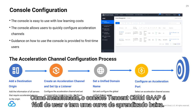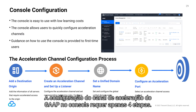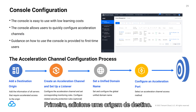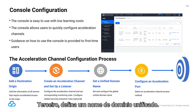The Tencent Cloud GAAP console is easy to use and has a low learning curve, with guidance available on Tencent Cloud's website for first-time users. Configuring GAAP's acceleration channel on the console only requires four steps: first, add a destination origin; second, create an acceleration channel and set up a listener; third, set a unified domain name; and finally, configure an acceleration port.